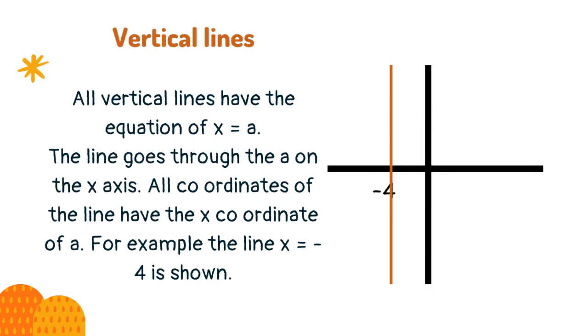All vertical lines have the equation x = a. The line goes through there on the x axis. All coordinates on the line have the x coordinate of a. For example, the line x = -4 is shown.